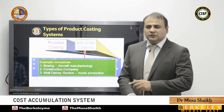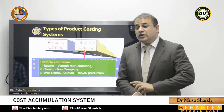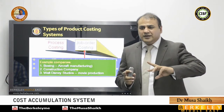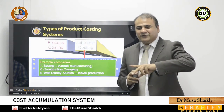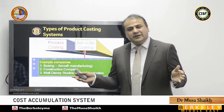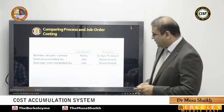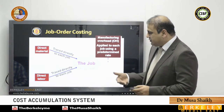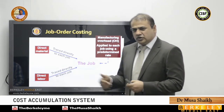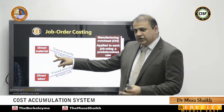Walt Disney Studio makes movies — if every movie were similar to the next, there would be nothing new to watch. We want new stories, new action, new romance, new thrill. So Walt Disney makes unique productions. A job in job order costing means an order of work you receive, for which you arrange material, labor, and overheads.